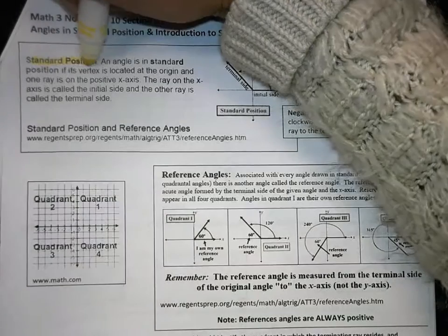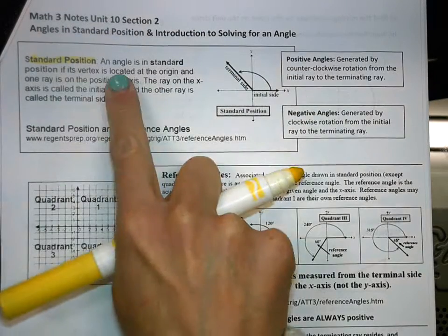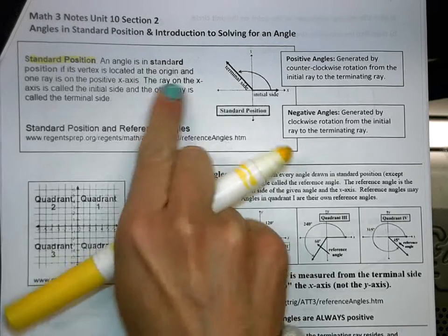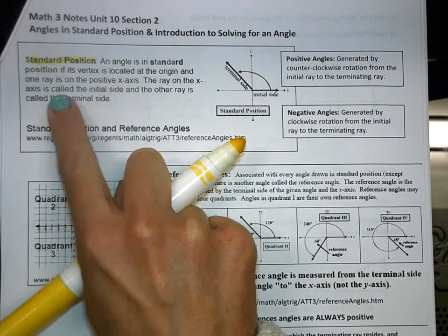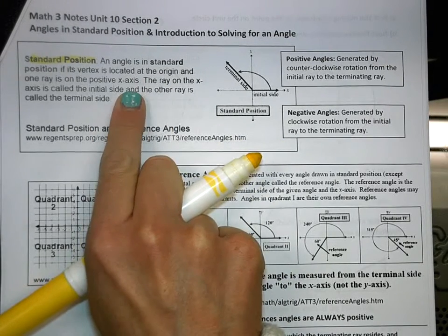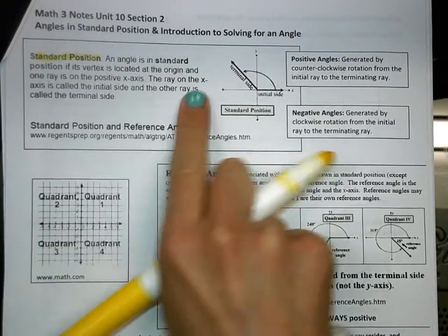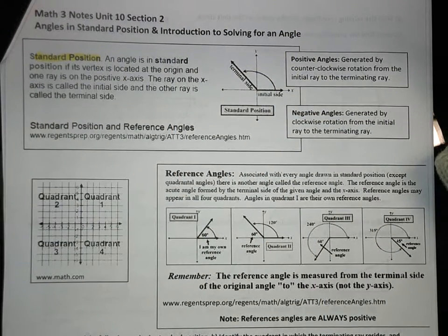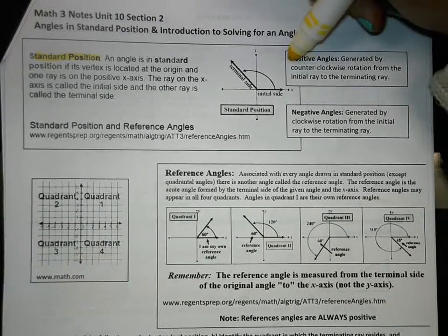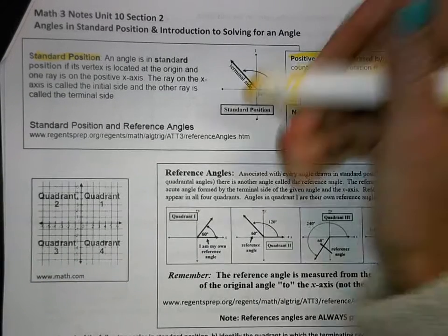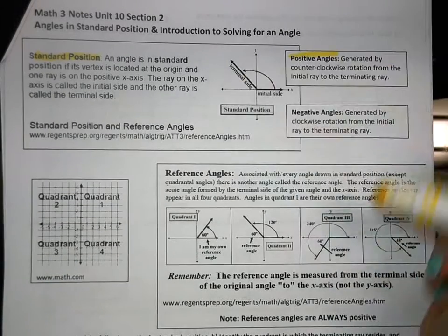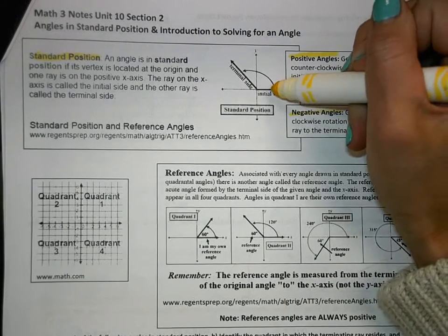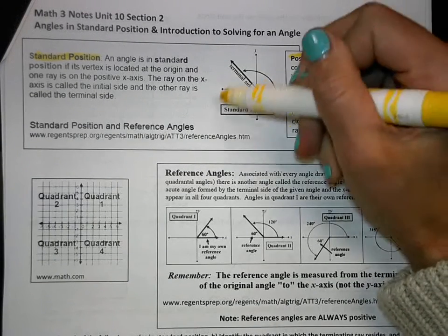So standard position is when an angle has its vertex located at the origin and one ray is on the positive x-axis. Positive angles are generated by going counterclockwise, like going to the left, where negative angles are where you start going down and going clockwise.